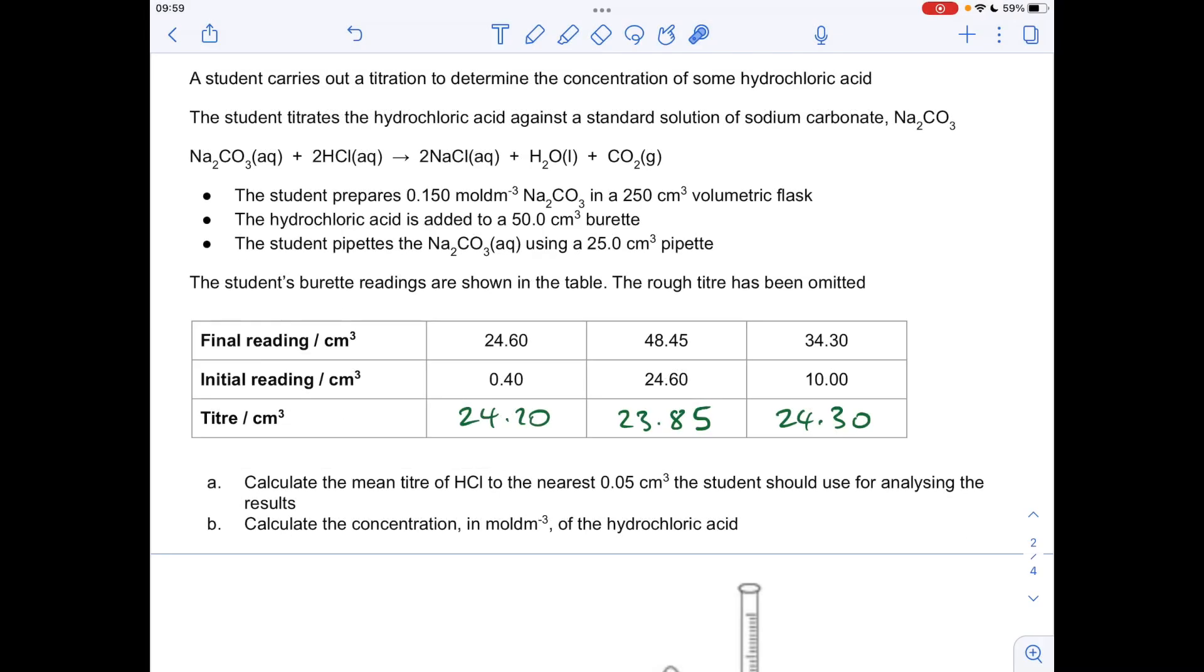You can see I've populated the titra row, which is the difference between the initial and final readings. But remember, they have to be recorded to the nearest 0.05 cm cubed. I often see students missing out that zero and that one, and they don't get the mark for that row. It has to be recorded to the nearest 0.05 cm cubed.